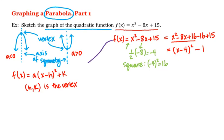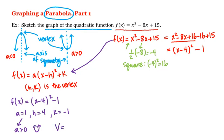And so we've put our function into vertex form. So we have f(x) = (x - 4)² - 1. Therefore, our a is equal to 1, our h is equal to 4, and our k is equal to -1. Since a here is greater than 0, our parabola will be opening upward, and our vertex is at (4, -1).